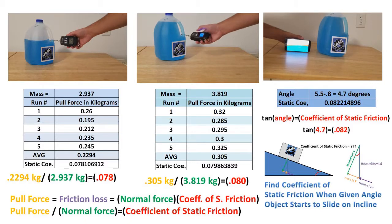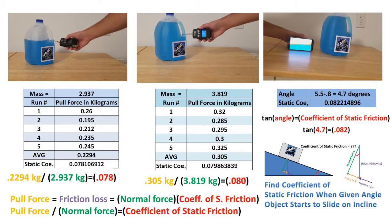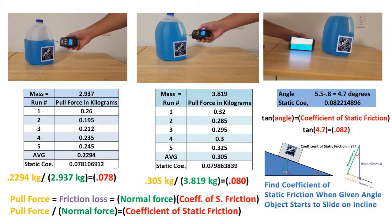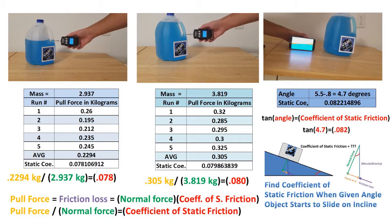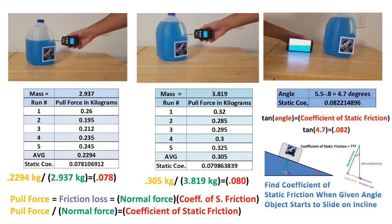Recall from the video that the tangent of the angle is equal to the coefficient of static friction. Plugging in our angle, we get a coefficient of static friction of 0.082.